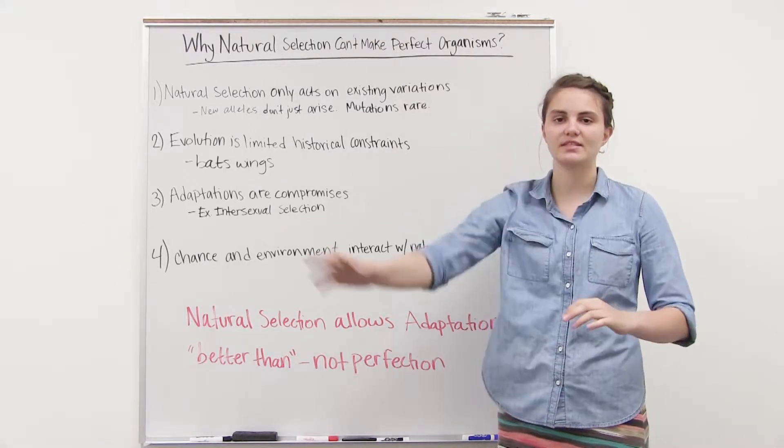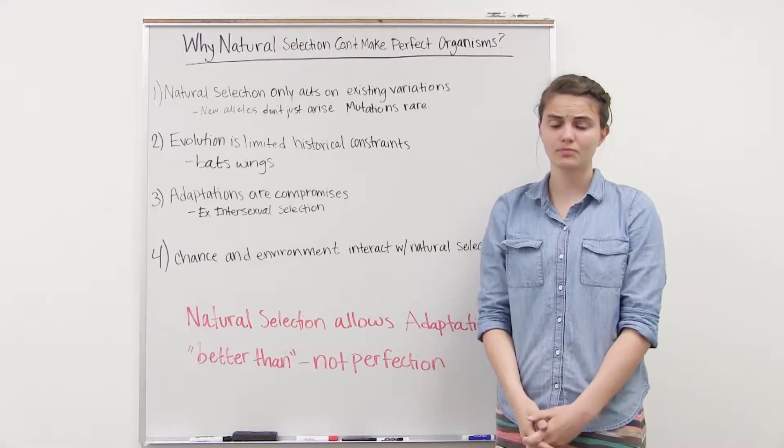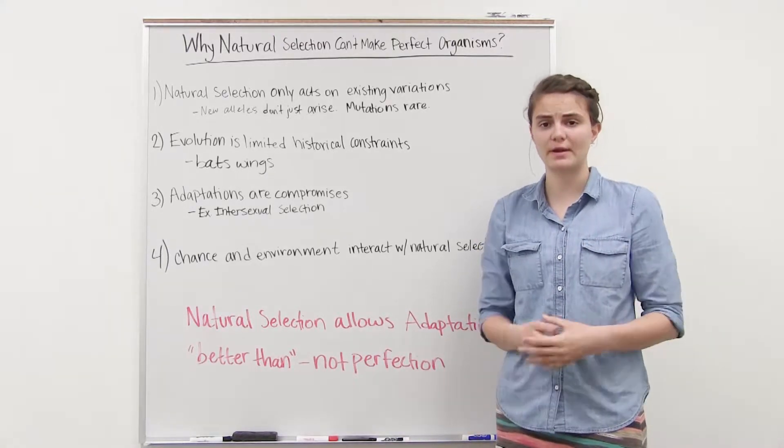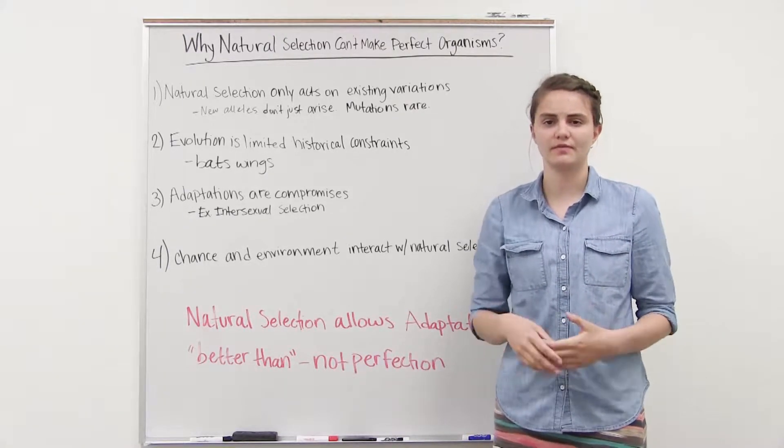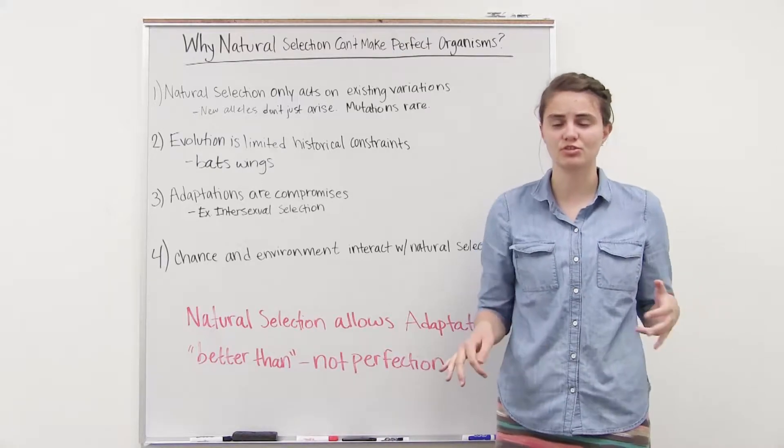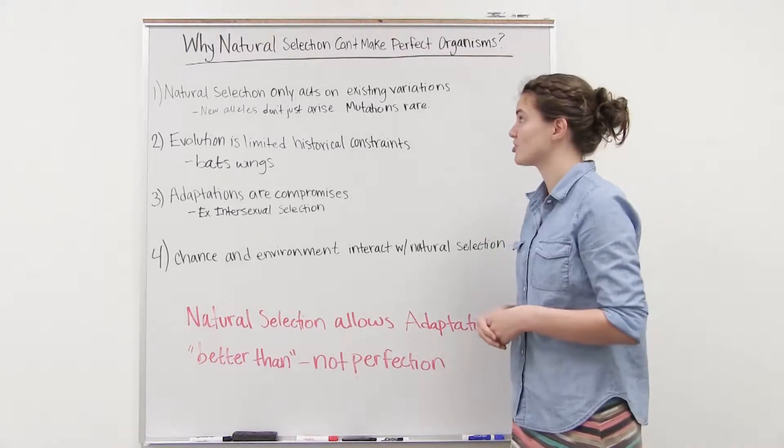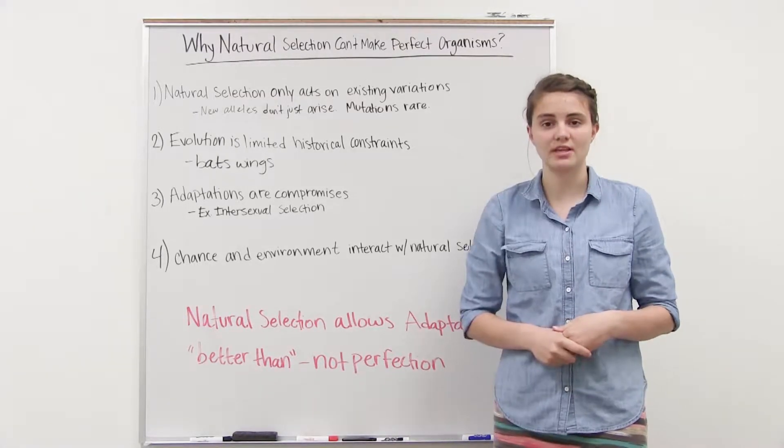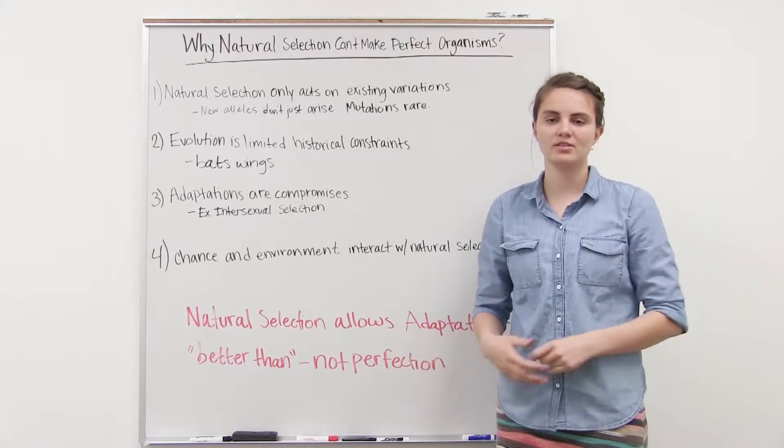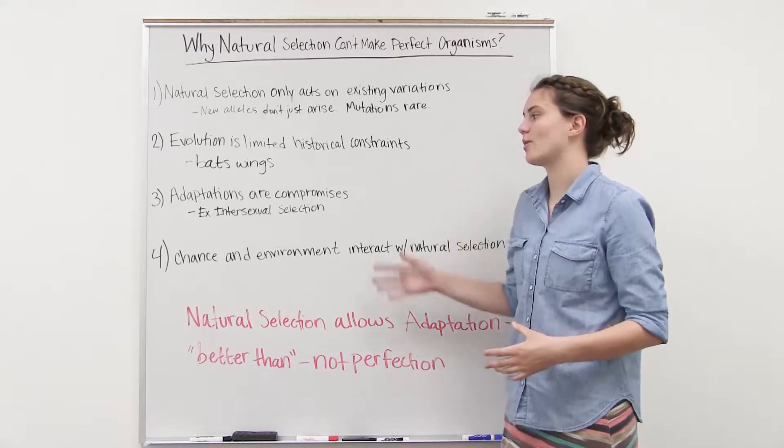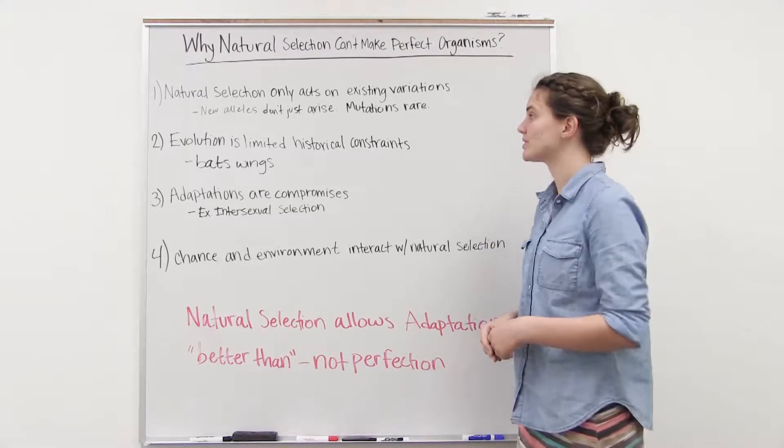A lot of times we see in nature organisms that match their environment, but they're not perfectly suited to their environment. If they just had certain things or certain traits, it would be more beneficial. So why can't natural selection make every organism perfectly suited for their environment? And the answer to that question is in these four points.